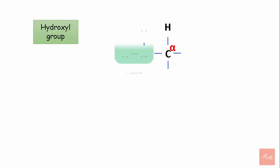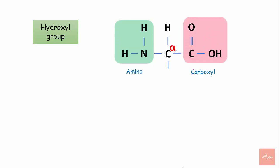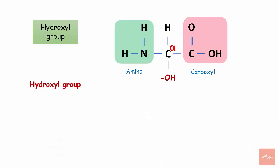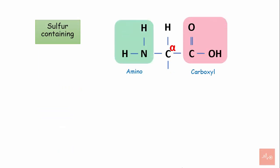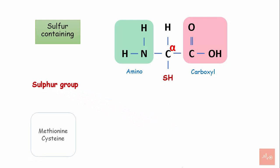Hydroxyl group-containing amino acids contain a carbon skeleton, one amino group, one carboxyl group, and a side chain containing a hydroxyl group. Examples are serine, threonine, and tyrosine. Sulfur-containing amino acids contain a carbon skeleton, one amino group, one carboxyl group, and a side chain containing a sulfur group. Examples of these amino acids are methionine and cysteine.